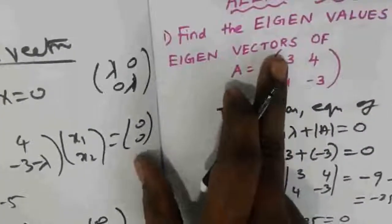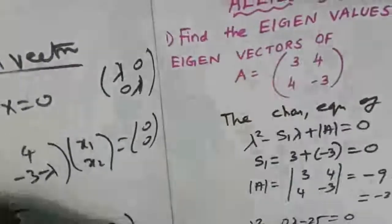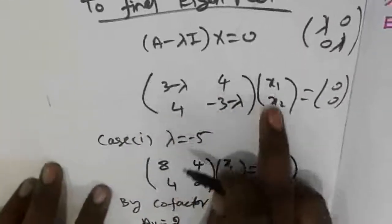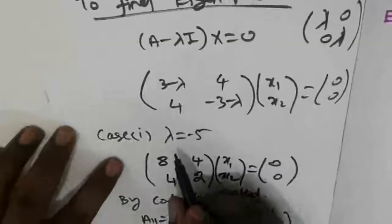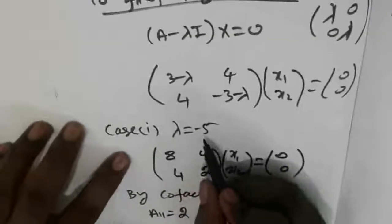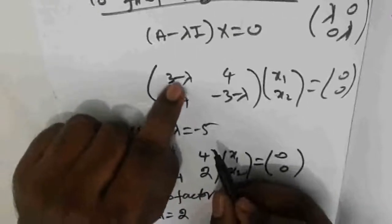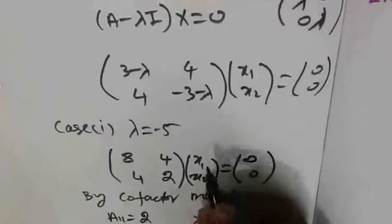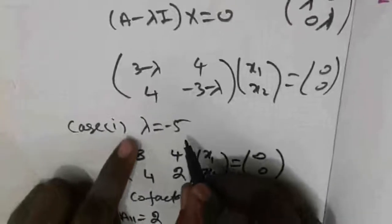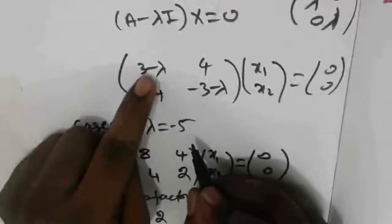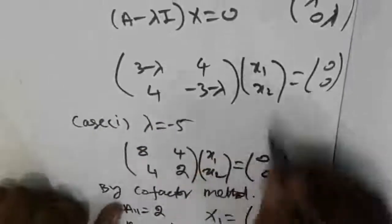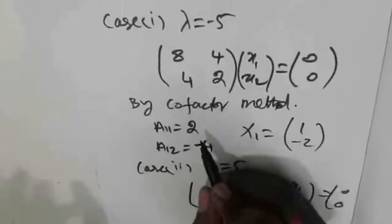Along the diagonal we apply minus lambda: so the matrix becomes [3 minus lambda, 4; 4, minus 3 minus lambda] times [x1; x2] equals [0; 0]. There are two eigenvalues. For Case 1, apply lambda equals minus 5. Substituting: [3-(-5), 4; 4, -3-(-5)] = [8, 4; 4, 2]. This is a 2 by 2 matrix.